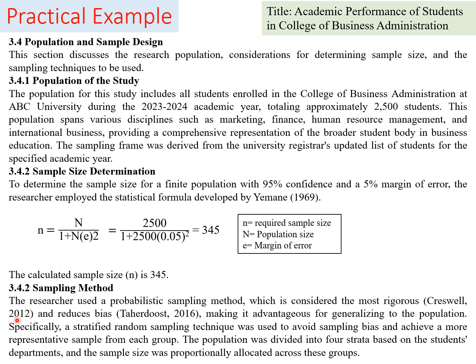The sampling method used is probability sampling, considered the most rigorous as it reduces bias through the randomization principle, increases representativeness, and makes it advantageous for generalizing to the population. Specifically, stratified random sampling was used because the students are grouped by department: marketing, finance, human resource management, and international business. Stratified random sampling avoids sampling bias and achieves a more representative sample from each department.